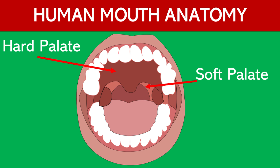Hard and soft palate. The hard palate is the bony front part of the roof of the mouth, and the soft palate is the softer back part. They separate the mouth from the nasal cavity.